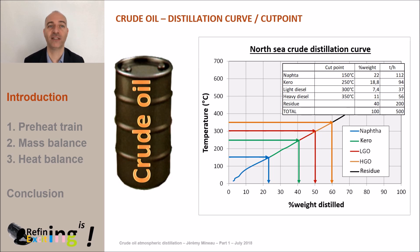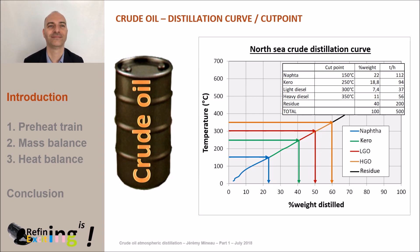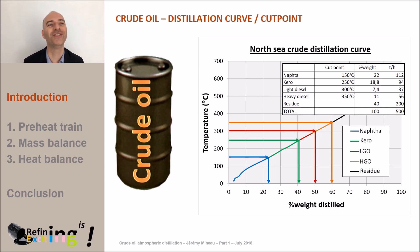If the separation process by distillation was perfect, we would obtain such a diagram, with each product having the distillation curve corresponding to the cut point selected just before. The purpose of atmospheric distillation is to separate the crude into different cuts on an industrial scale, using the difference in boiling temperature of the molecules present in the crude.